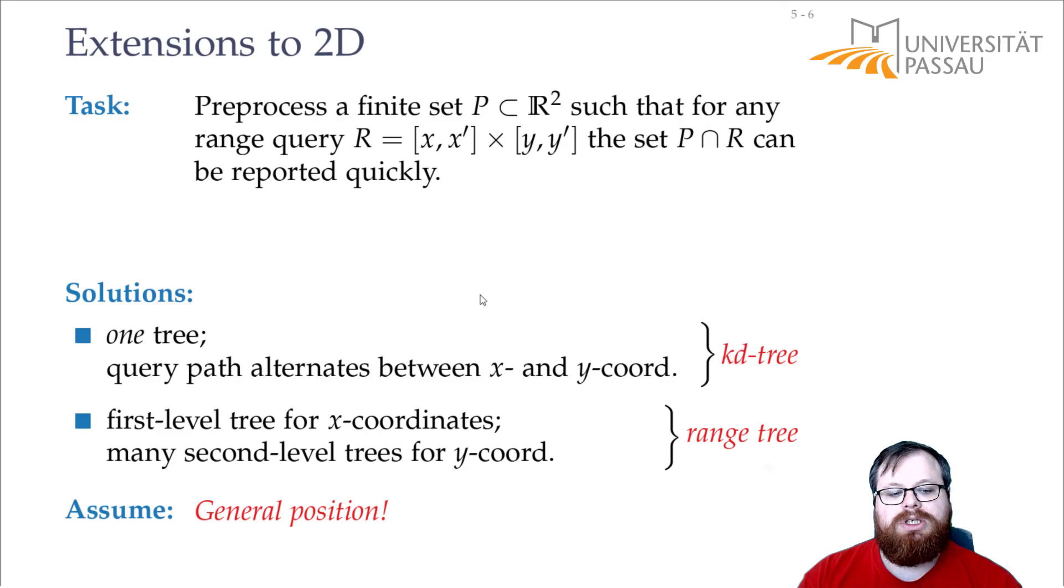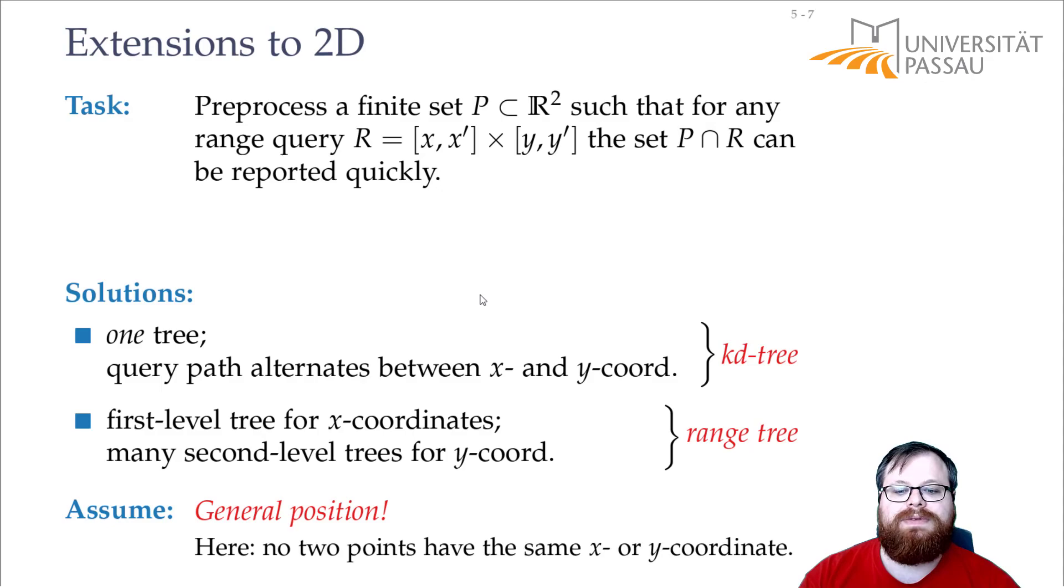There's one more assumption we do: we have general position. So we assume that no two points have the same x or y coordinate. Later, we will find out how we can still solve it when there are two points with the same x or y coordinate. But for now, for the description, it's much easier that we assume that we don't have this.